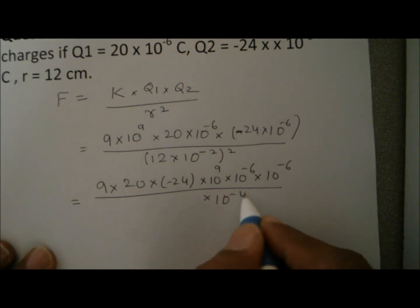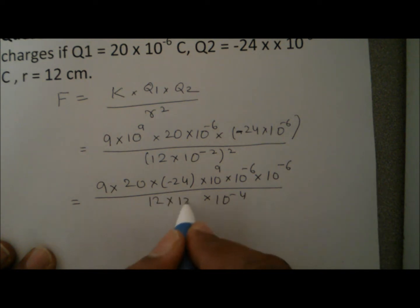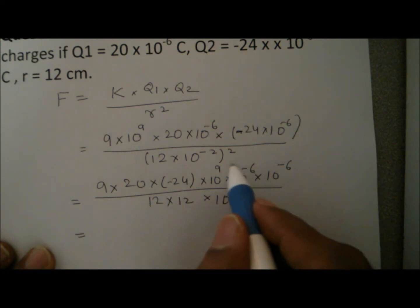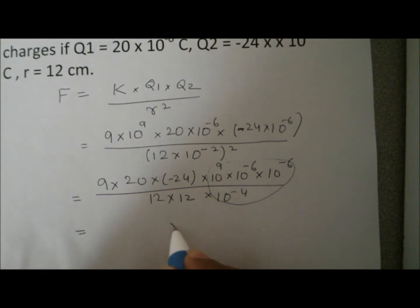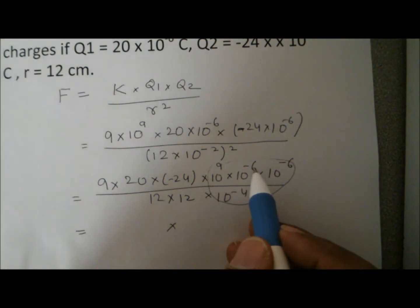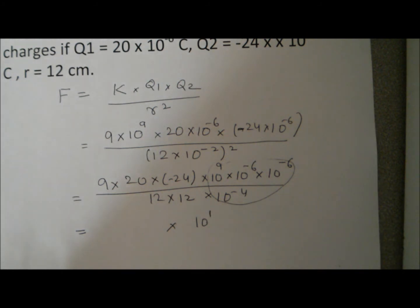It's 10 to the power minus 4 and it's 12 into 12. Let's put all of these together. We get 9 minus 6 is 3, 3 minus 6 is minus 3, and then 4 goes up, so it becomes 10 to the power plus 1.